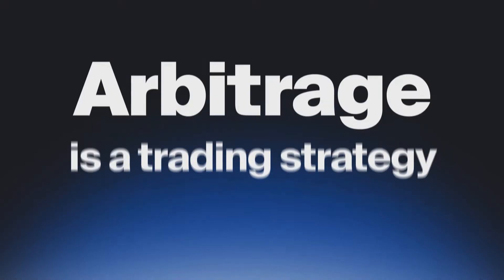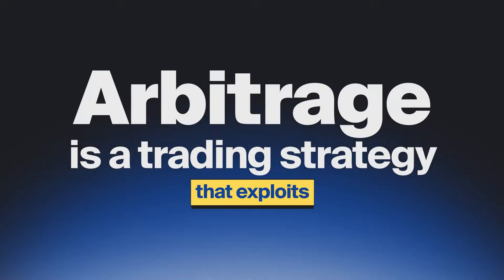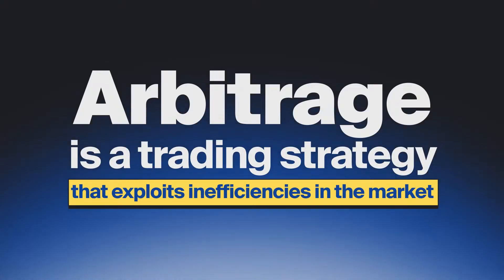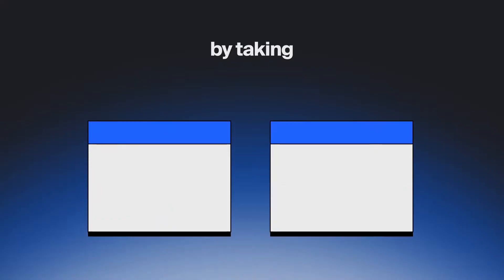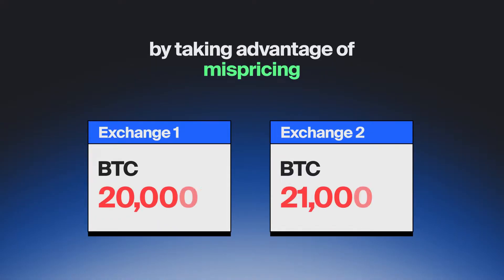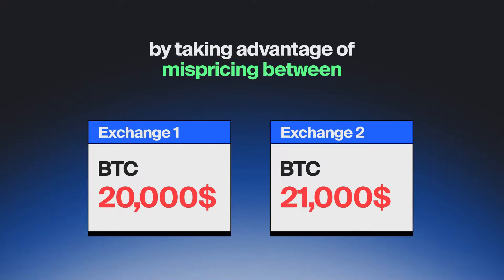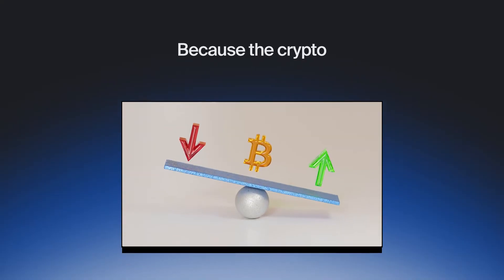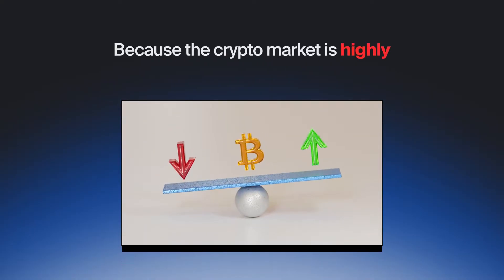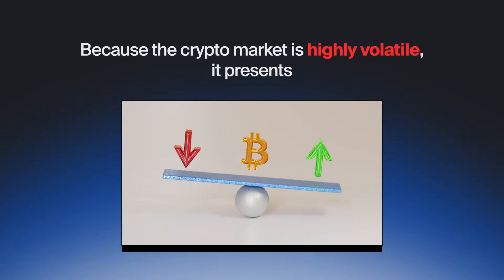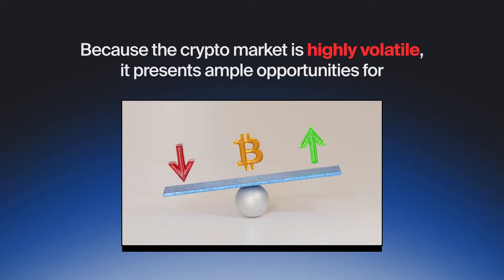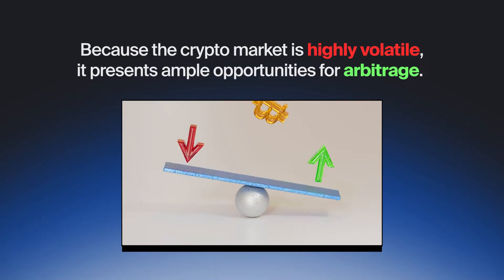Arbitrage is a trading strategy that exploits inefficiencies in the market by taking advantage of mispricing between identical assets. Because the crypto market is highly volatile, it presents ample opportunities for arbitrage.